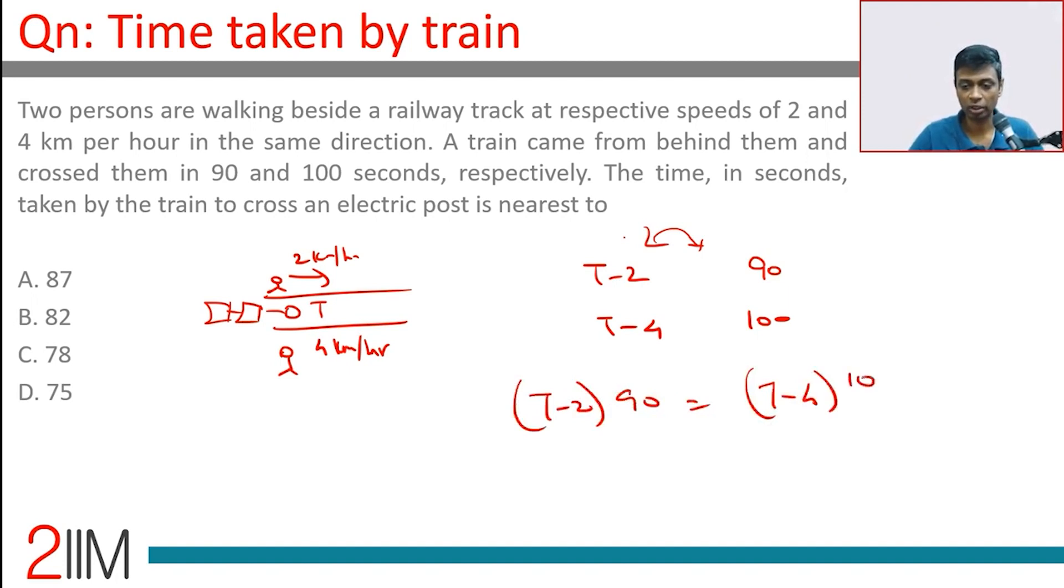Time taken times speed is constant: (t minus 2) times 90 equals (t minus 4) times 100. T is the speed of the train. 90t minus 18 equals 100t minus 400, or t equals 22.